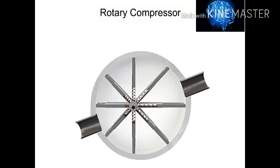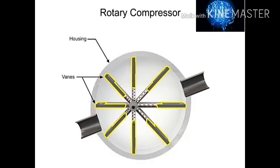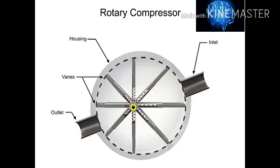Rotary compressors typically consist of a cylindrical housing with adjustable rotary vanes, an inlet, and an outlet. The vanes are on an off-center drive shaft.